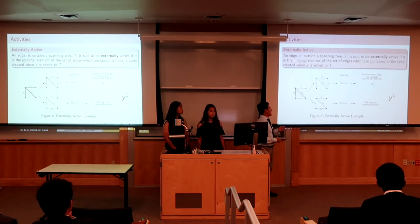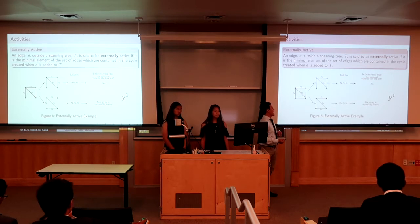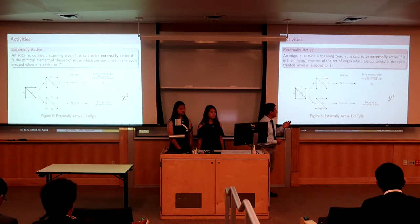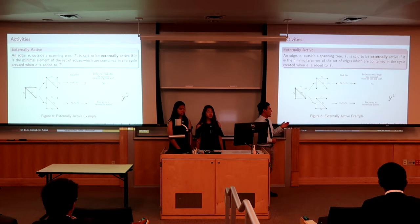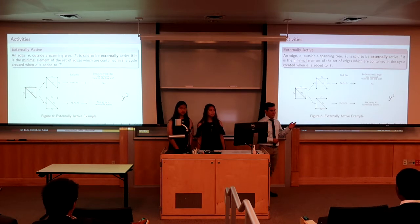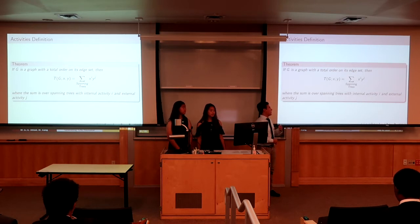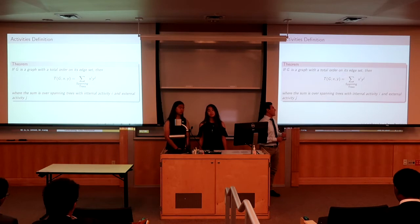An edge is externally active if it's outside of a spanning tree and, when you add it into the spanning tree, it is the least element of the cycle it creates. Here we see that edge two is not the least element of the cycle it creates, whereas edge three is — so edge three is externally active, and it raises y to the first power for one external activity. When we sum over all spanning trees, raising x to the number of internally active edges and y to the number of externally active edges, we get the top polynomial.